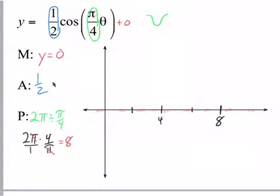Next, we look at our amplitude, which is one half. So what I'm going to do is I'm going to go up a half, and I'm going to go down a half. Just like that. Just mark it up and down, and we'll go up and down half.